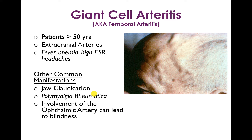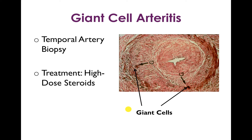Polymyalgia rheumatica — weakness and pain of limb girdle muscles such as the shoulder or hip — is closely associated with giant cell arteritis. A classic finding is that patients have trouble getting up out of a chair or combing their hair. Diplopia or vision loss may signify involvement of the ophthalmic artery. The way to confirm the diagnosis is temporal artery biopsy, which shows giant cells in the vessel wall, giving the arteritis its name. Treatment is high-dose steroids such as prednisone.